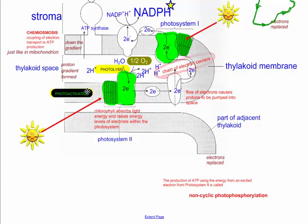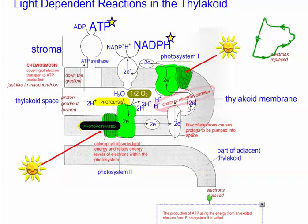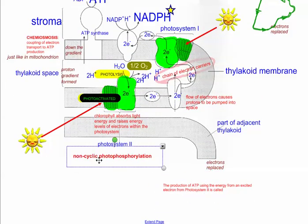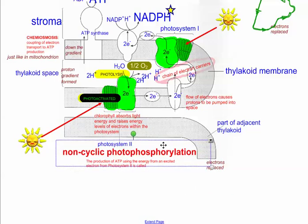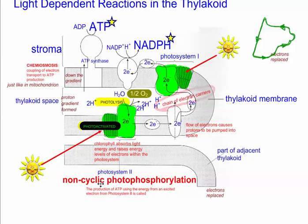The chlorophyll is photoactivated — that's another term for that. This straight-line chain movement of electrons is called non-cyclic photophosphorylation. Non-cyclic means the electrons are moving in a linear fashion, not in a cycle. There's obviously also one called cyclic photophosphorylation, which is coming up in the next video.